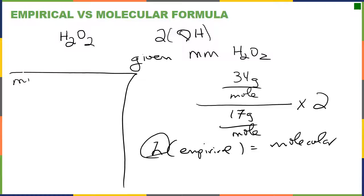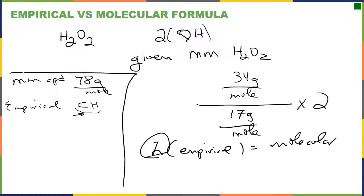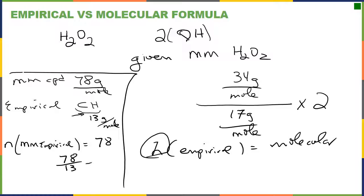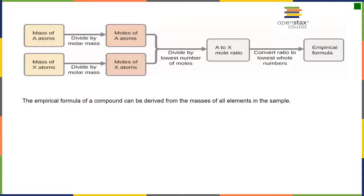Another example: the molar mass of some compound is 78 g/mol and its empirical formula is CH. We calculate the molar mass of CH, which adds up to 13 g/mol. Then n × 13 = 78, so n = 78 ÷ 13 = 6. We have six CH units, written as subscripts, giving us C₆H₆.